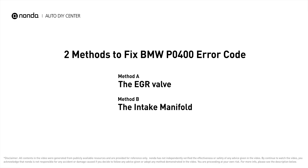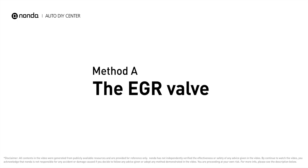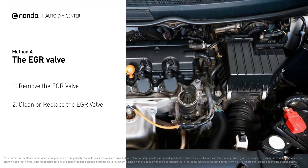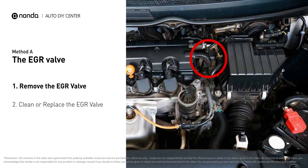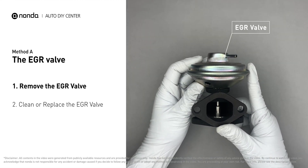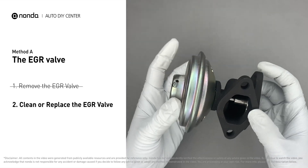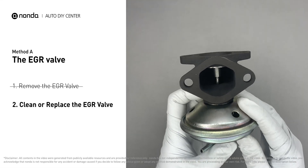Here are two of the most practical solutions to fix BMW's P0400 error code. Method A: the EGR valve. Looking at the engine from the front, the EGR valve is located towards the rear of the engine, just to the right side of the center. First, carefully remove the EGR valve from your car.